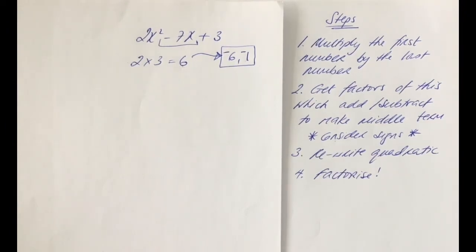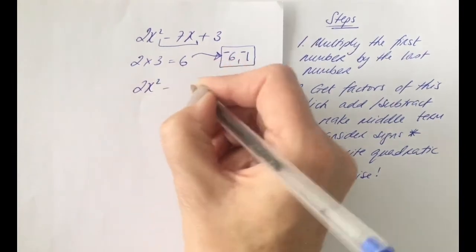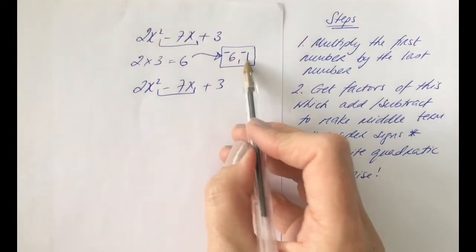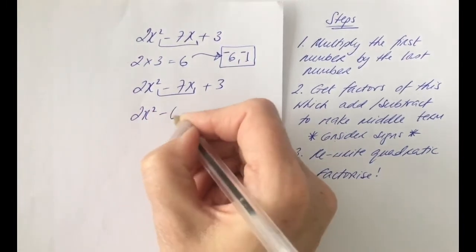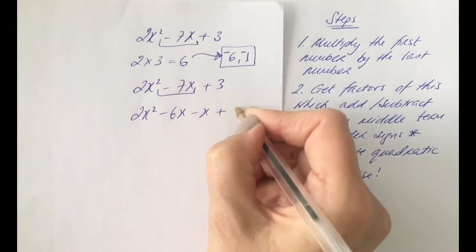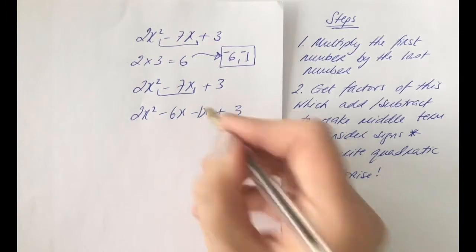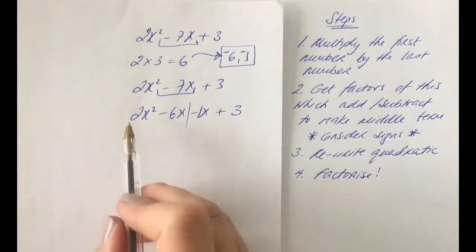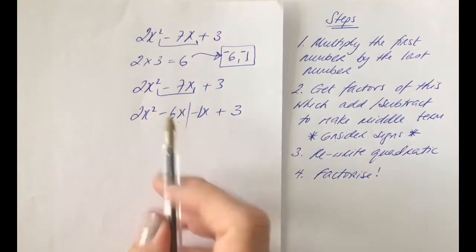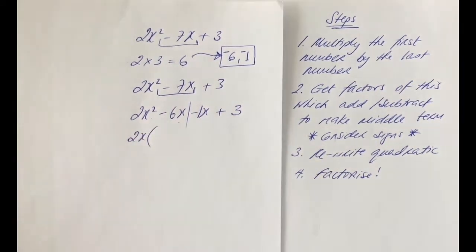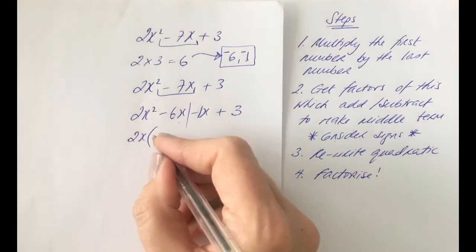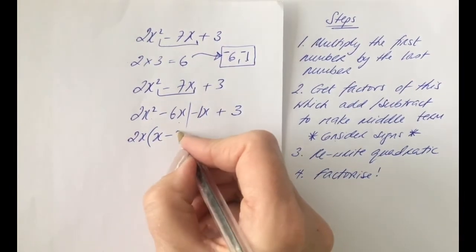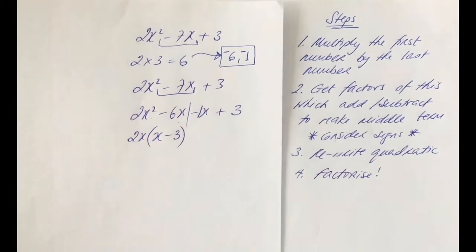Step 3 then. We're going to rewrite the quadratic. And instead of that middle term minus 7x, we're going to expand it into minus 6x minus x plus 3. We're going to split and factorize now. Common to 2x squared minus 6x is 2x. What would we multiply to 2x to get 2x squared? We need to multiply by an x. And we need to multiply by a minus 3 in order to get a minus 6x here.